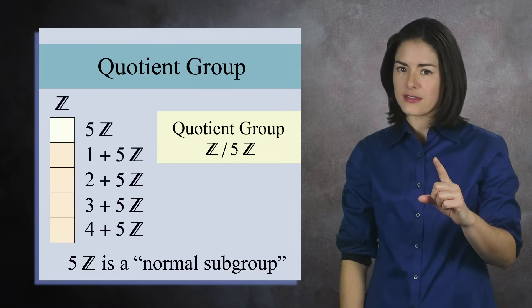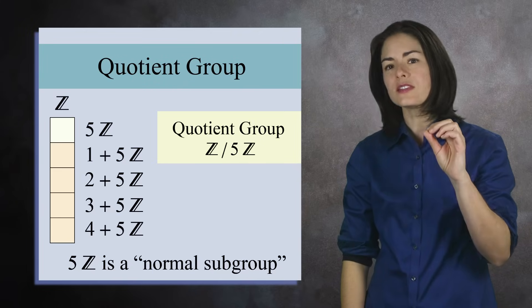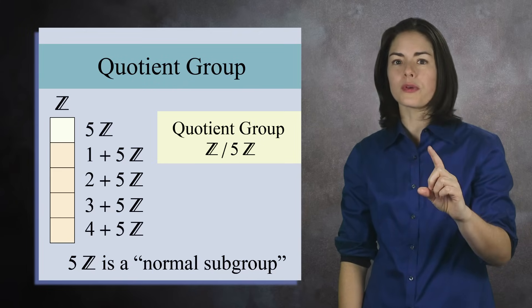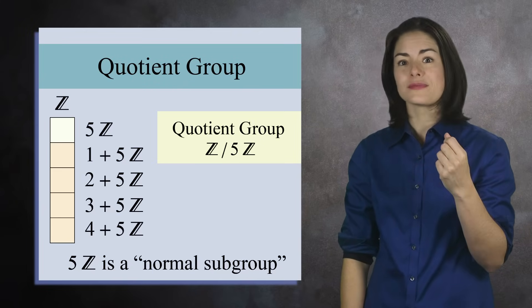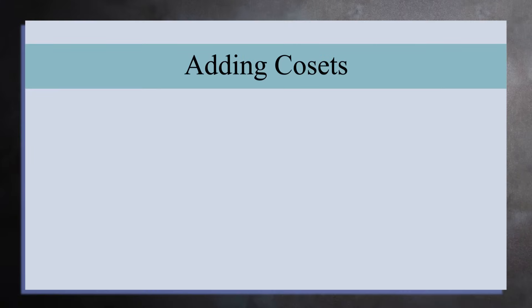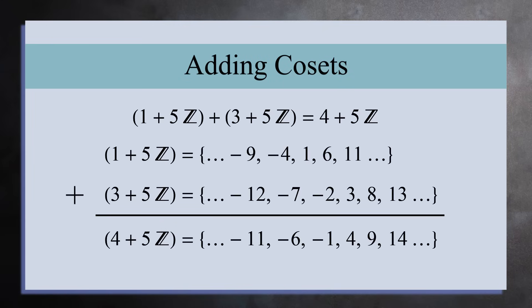But the critical insight in this process was the observation that you can treat these cosets as elements in a new group, a coset group, if you will. For example, if you add the coset 1 plus 5Z to the coset 3 plus 5Z, you get the coset 4 plus 5Z. The way you add these two cosets is to add all the numbers in the first coset with all the numbers in the second coset. The resulting set turns out to be exactly the coset 4 plus 5Z.